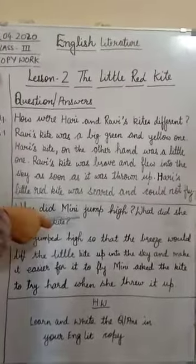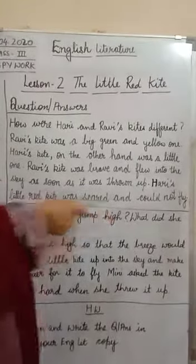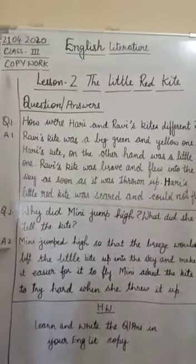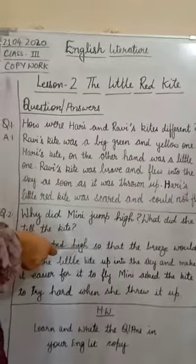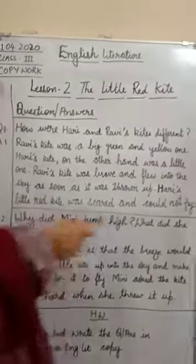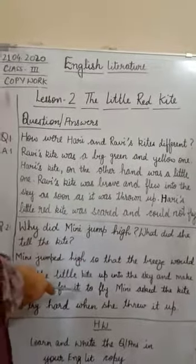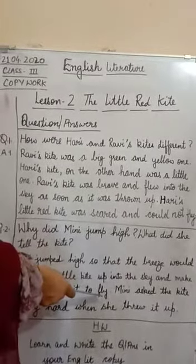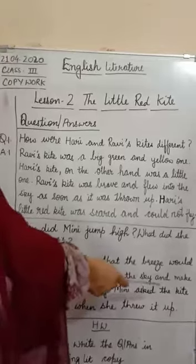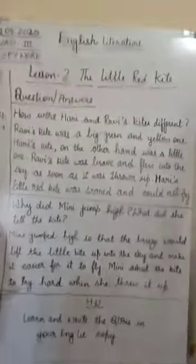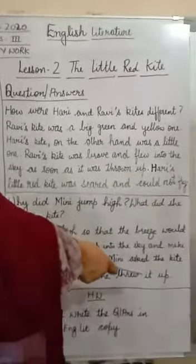Question number 2: Why did Minnie jump high? What did she tell the kite? Answer number 2: Minnie jumped high so that the breeze would lift the little kite up into the sky and make it easier for it to fly. Minnie asked the kite to try hard when she threw it up. After writing answer number 2, you will draw the finishing line.